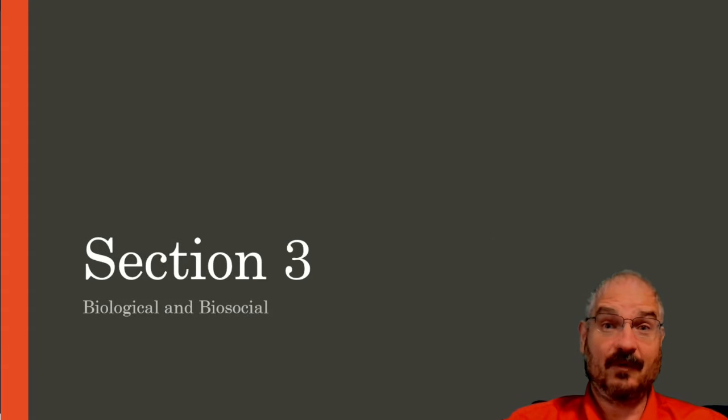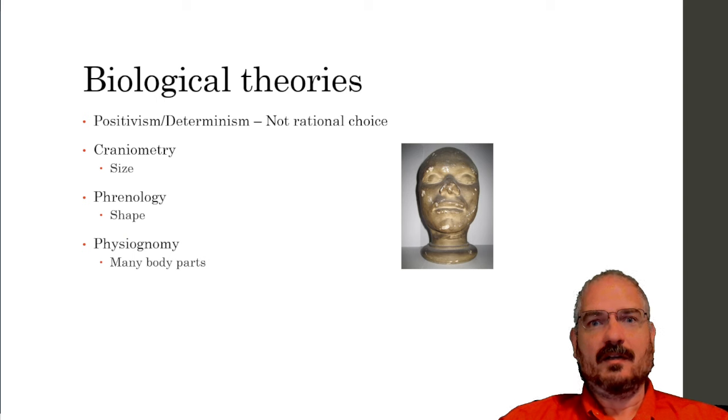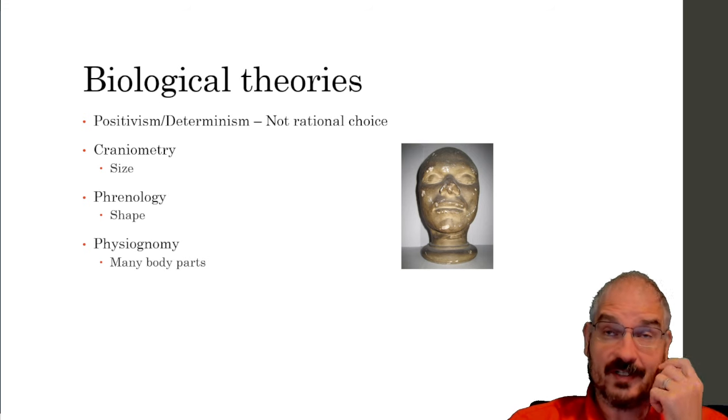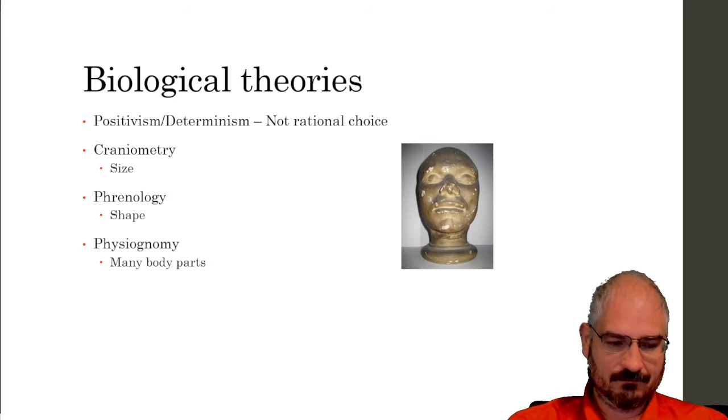All right everybody, we are back with section three of our criminology course. Today we're going to be talking about biological and biosocial theories. Starting in the mid to late 19th century, this idea of crime as a rational choice was already starting to be seen as not a very good explanation for crime.